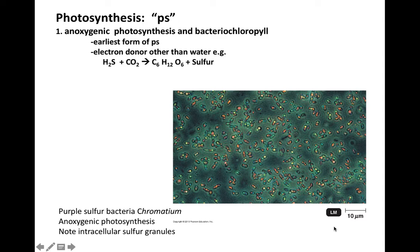Backing up in evolutionary time, we want to remember that when the first cells evolved some 3.6 to 3.8 billion years ago, Earth's atmosphere was anaerobic or anoxic — there was no free molecular oxygen present. Then, with the evolution of porphyrin rings, this permitted the evolution of a primitive type of photosynthetic pigment called bacteriochlorophyll.